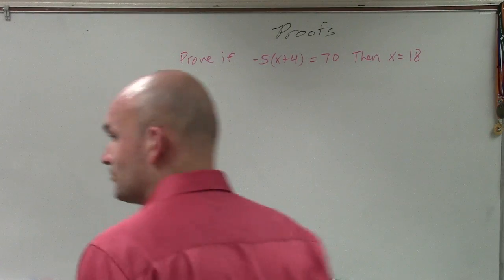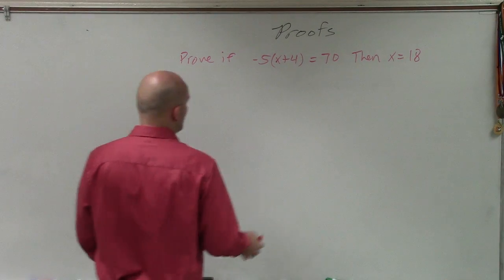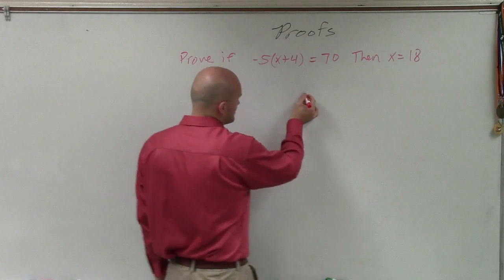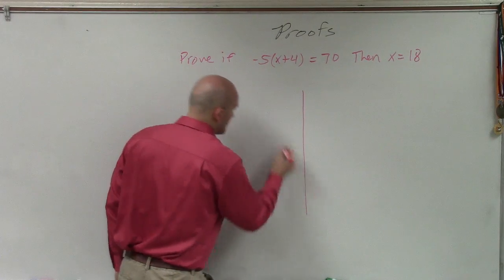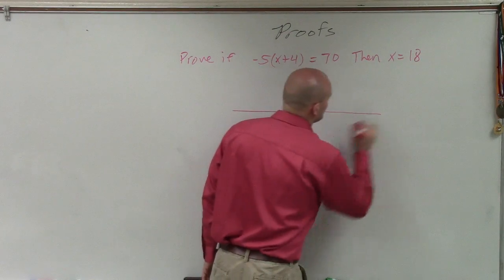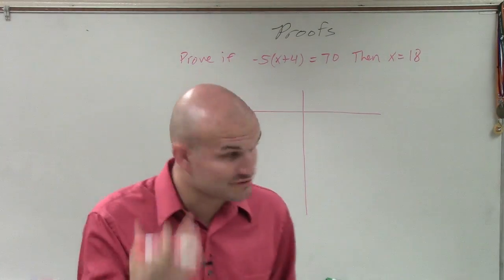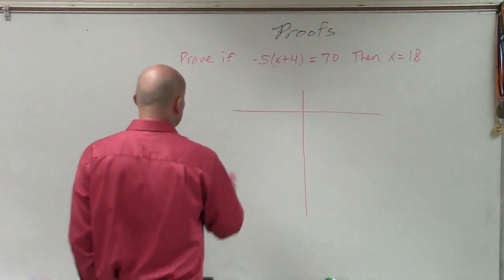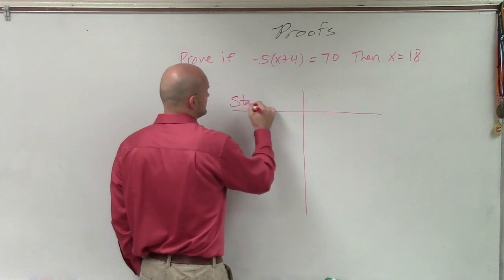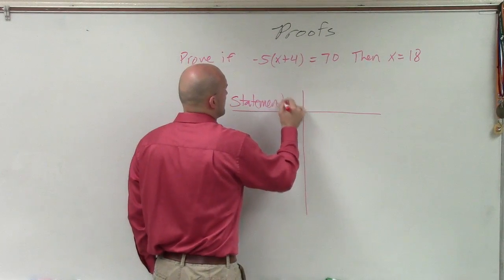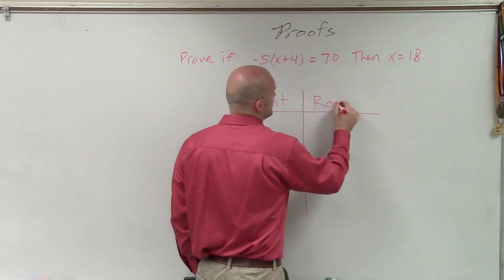When starting out with a two-column proof, the first thing you're going to want to do is write out two columns. So in creating a two-column proof, we're going to have two columns. And on the left side, we're going to have a statement. Then we're going to provide a reason.